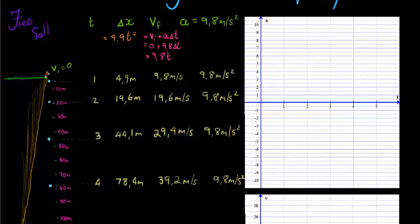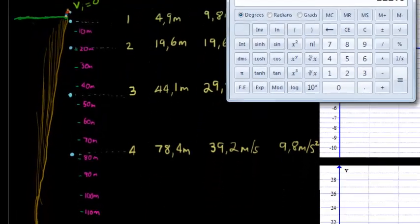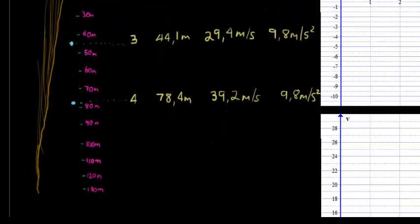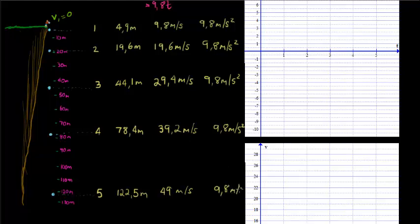Now last one, after 5 seconds. 4.9 times 5 squared gives me 122.5. That's quite far down. So I've already done 122.5 meters. That's after 5 seconds. 9.8 times 5 gives me exactly 49 meters per second, and 9.8 meters per second squared.